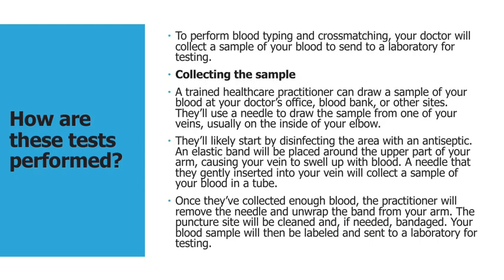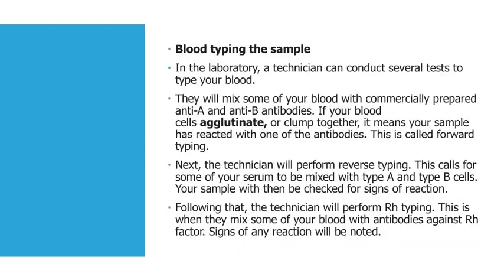They will start by disinfecting the area with an antiseptic, and an elastic band will be placed around the upper part of your arm, causing your veins to swell with blood. A needle is gently inserted into your vein to collect a blood sample into a tube. Once enough blood is collected, the practitioner will remove the needle and unwrap the band from your arm. The puncture site will be cleaned and, if needed, covered with a bandage. Your blood sample will then be labeled and sent to the laboratory for testing.